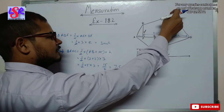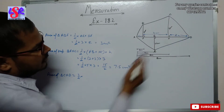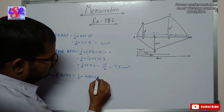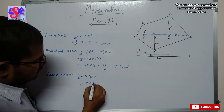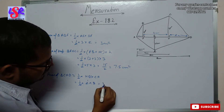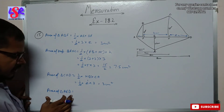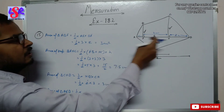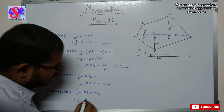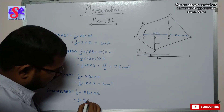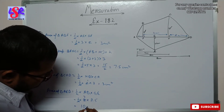The area of triangle CHD equals 1/2 into base HD into height CH, which is 1/2 into 2 into 3. Simplifying gives 3 square centimeters. The area of triangle AED equals 1/2 into base AD into height GE, which is 1/2 into 8 into 2.5. The 2 cancels to give 4, and 4 into 2.5 equals 10 square centimeters.